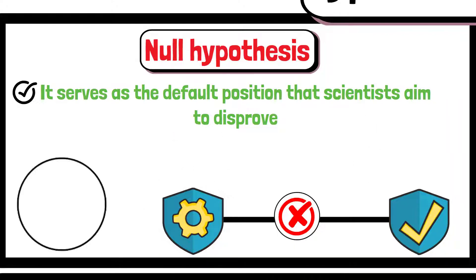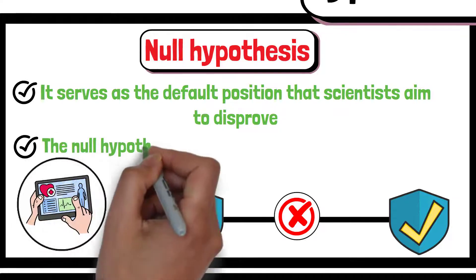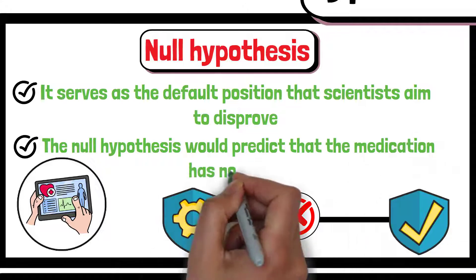For example, if researchers are testing whether a new medication reduces symptoms of a disease, the null hypothesis would predict that the medication has no effect.